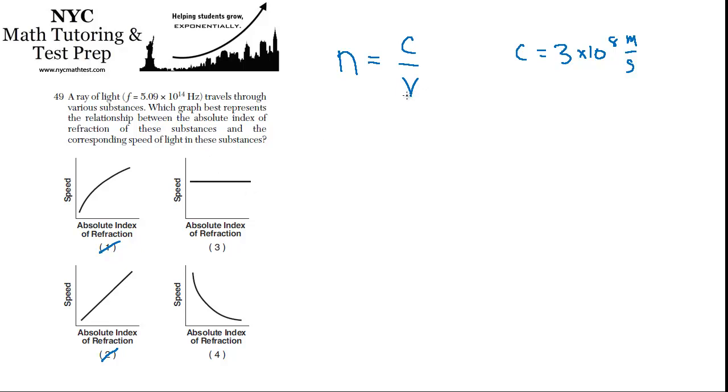It's not that the index doesn't affect the velocity at all. It does affect it. If the index goes up or down, the velocity is going to go down or up. So option 3 doesn't make sense. Option 4 is the best choice.